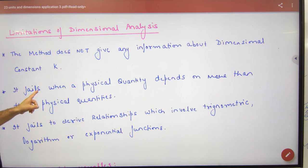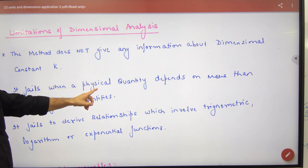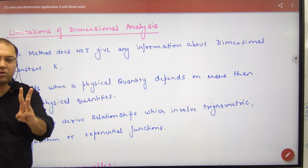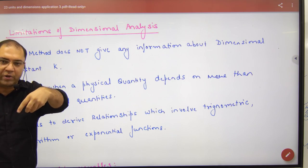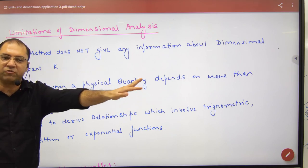The second limitation is it fails when a physical quantity depends on more than 3 physical quantities raised to powers a, b, and c. The 4th, 5th, and 6th are not allowed.